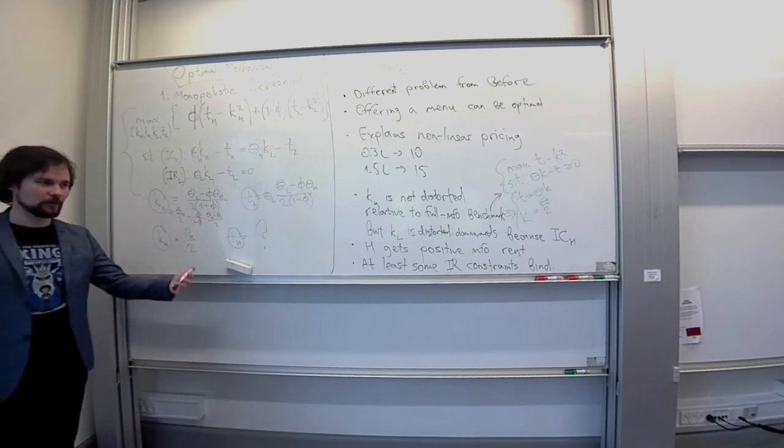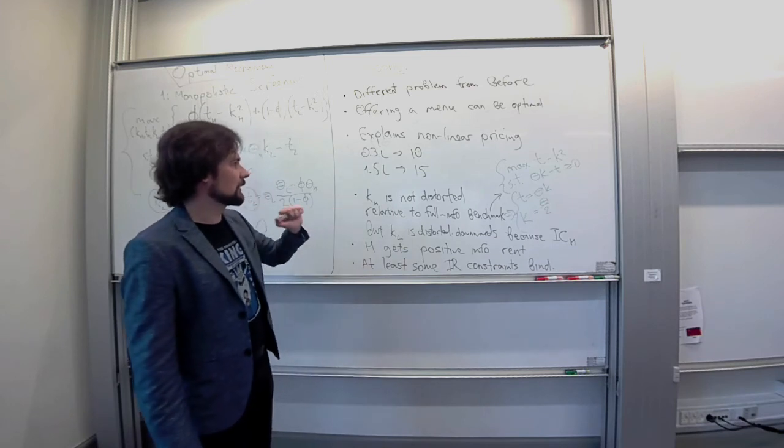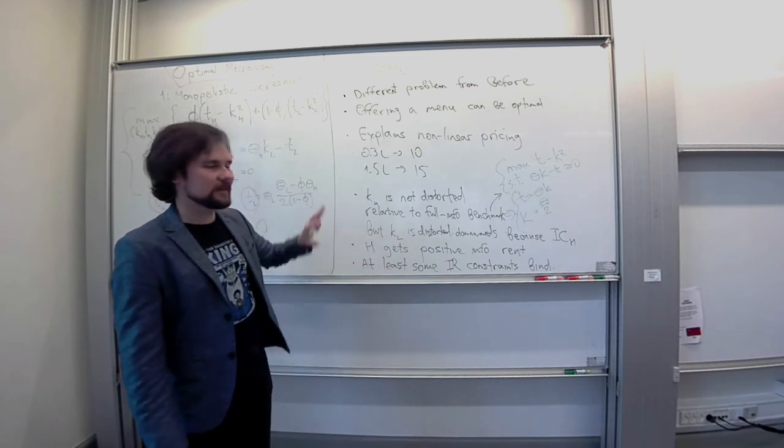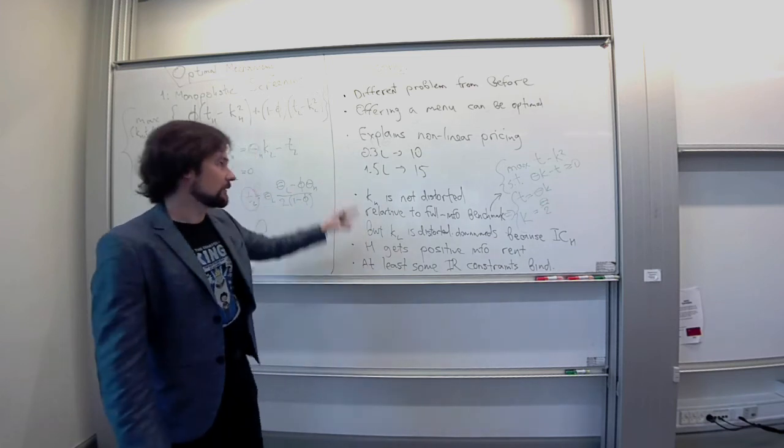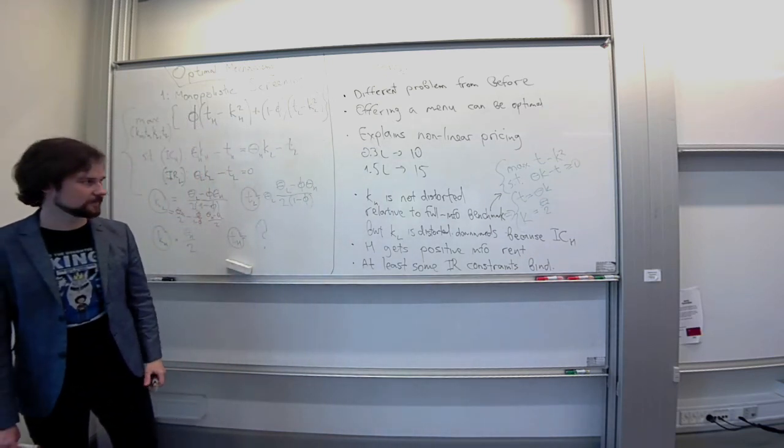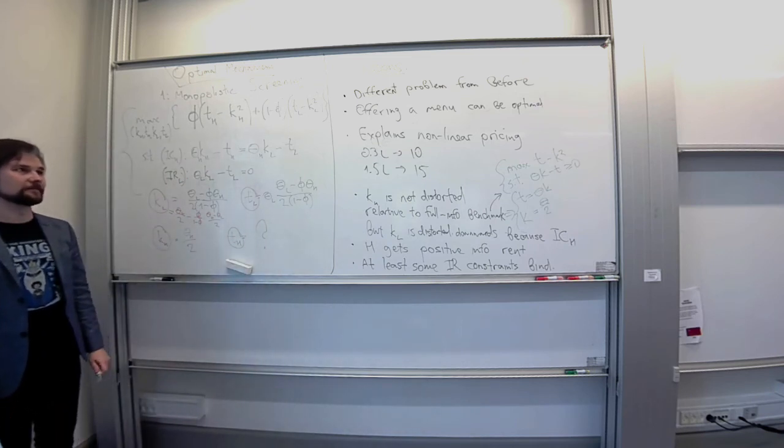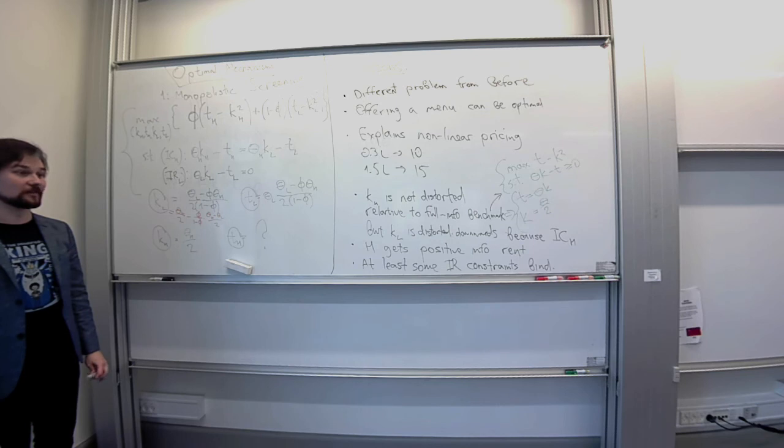These are the takeaways that we want to take away from the monopolistic screening problem that we solved last time around. What we will do today, starting after the break, is we will see that in the more general model, these takeaways still hold. And they apply more generally. They hold not just in our simple example but in the more general thing as well.